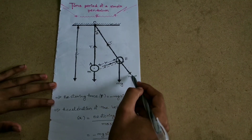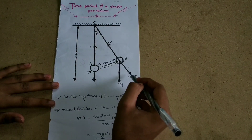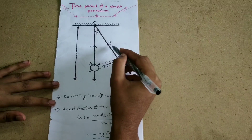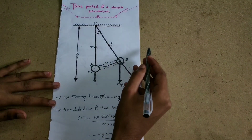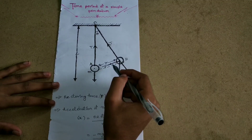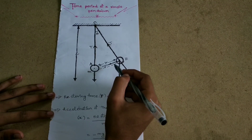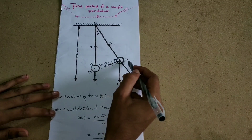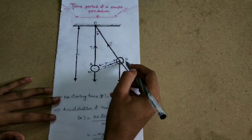The component mg cos theta acts in the direction of the string and is balanced by the tension T. The component mg sin theta acts tangentially to the displacement and tries to bring the pendulum back to mean position A. This is the restoring force — tangential to the displacement.